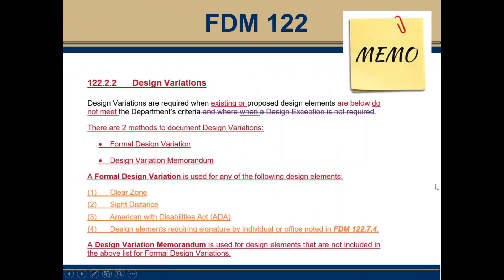Section 122.2.2 was added with clarifications on design variations. There are three types of design documentation for these submittals: design exceptions, and design variations which are sorted into two categories — either a formal design variation or a design variation memorandum. A formal design variation is required for any of the following design elements: clear zone, sight distance, Americans with Disabilities Act requirements, or design elements requiring signature by the individual or office noted in 122.7.4. A memo can be used for all design elements not included in the formal design variation list.